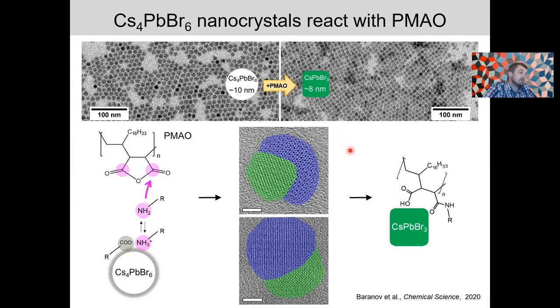And that gave us a chance to actually capture them on the TEM grid, put them into microscope, and see that reaction intermediates are heterostructures composed of domains of perovskite nanocrystals shaded here in green that grow over time on this zero-D particles.